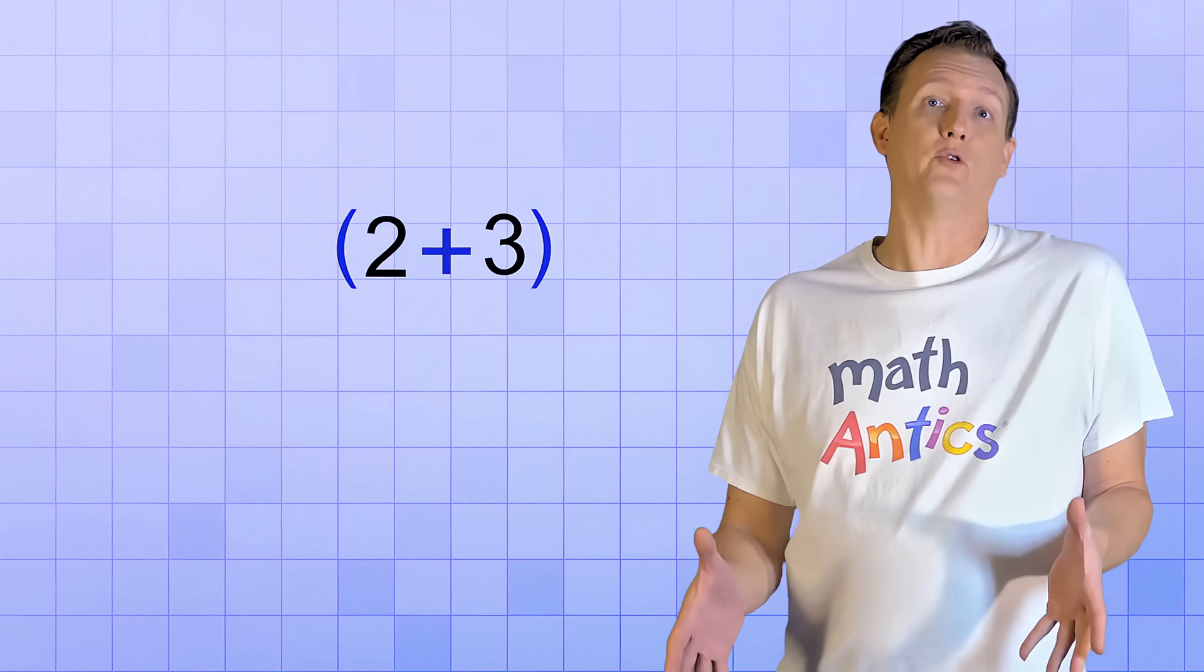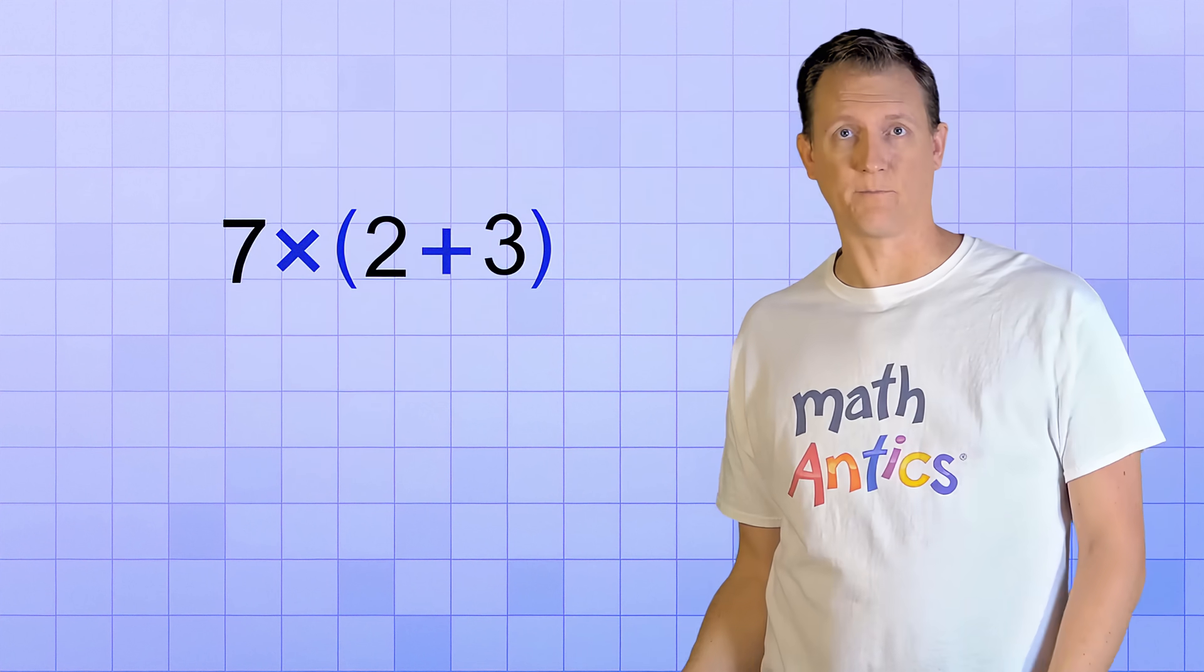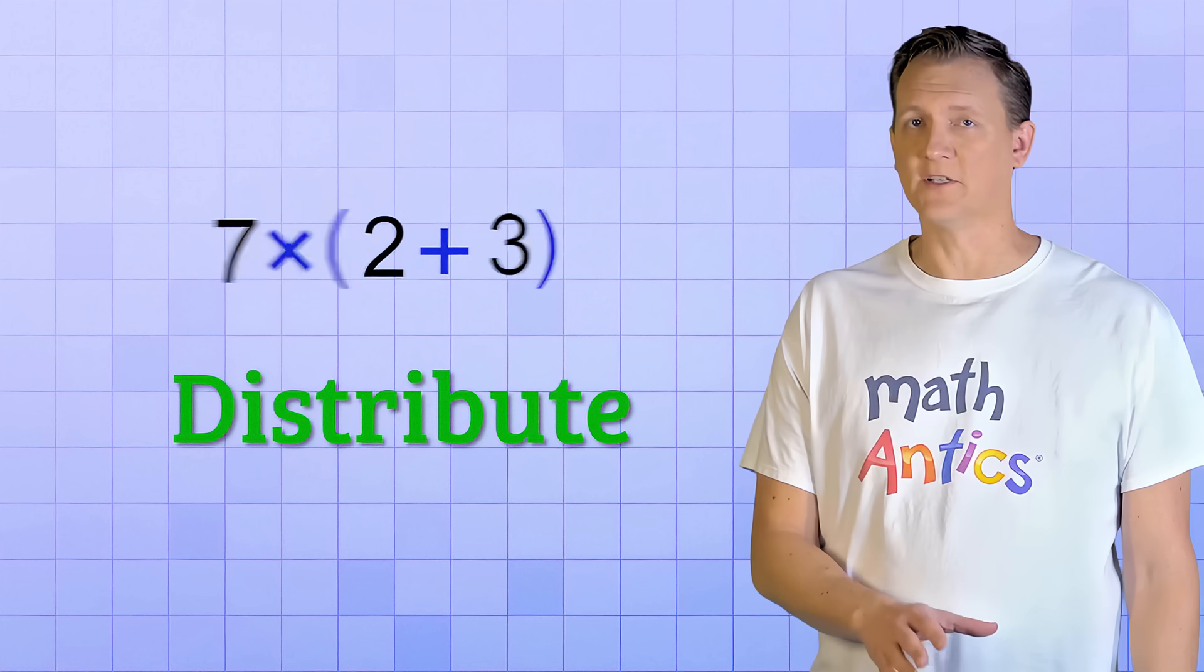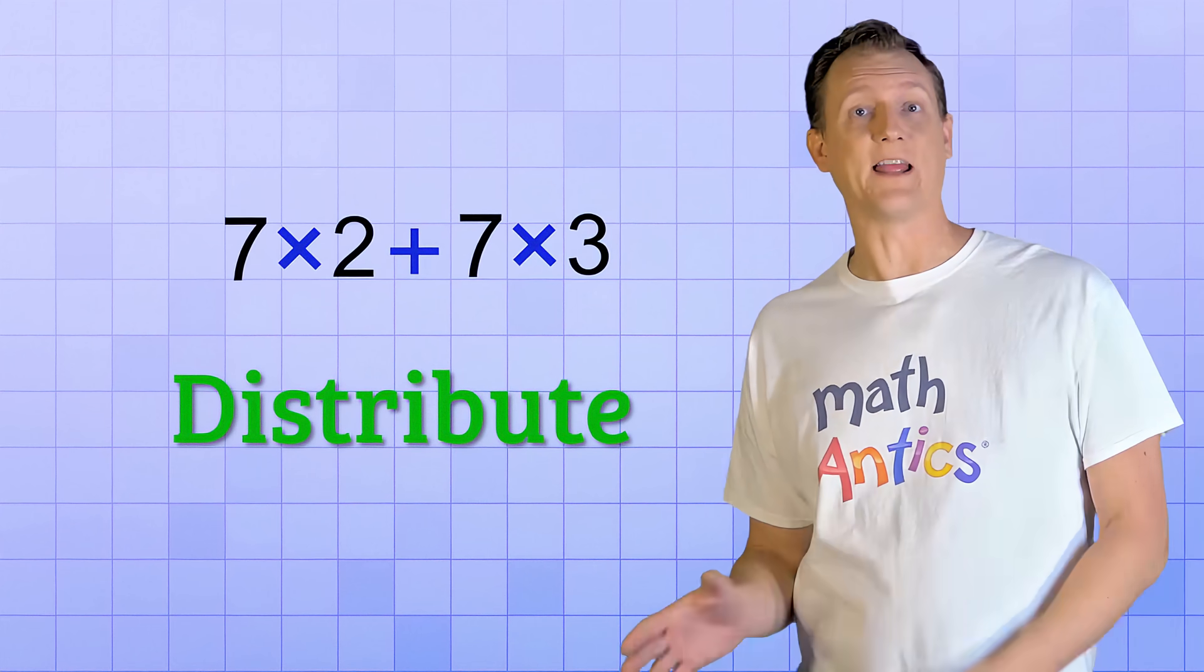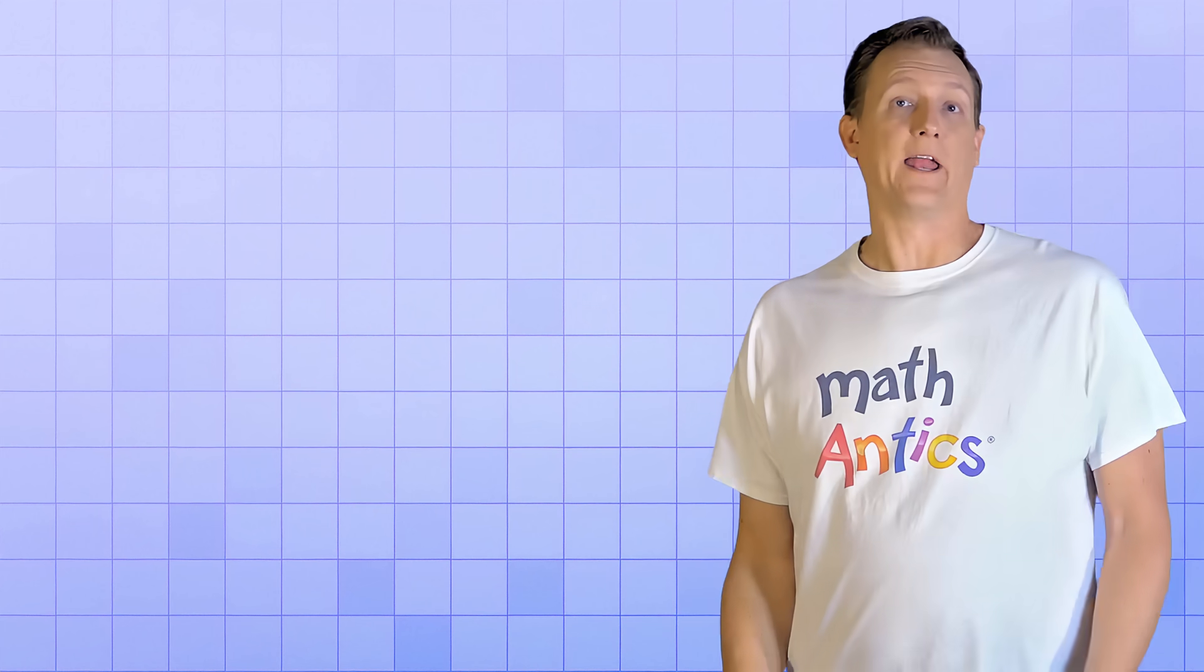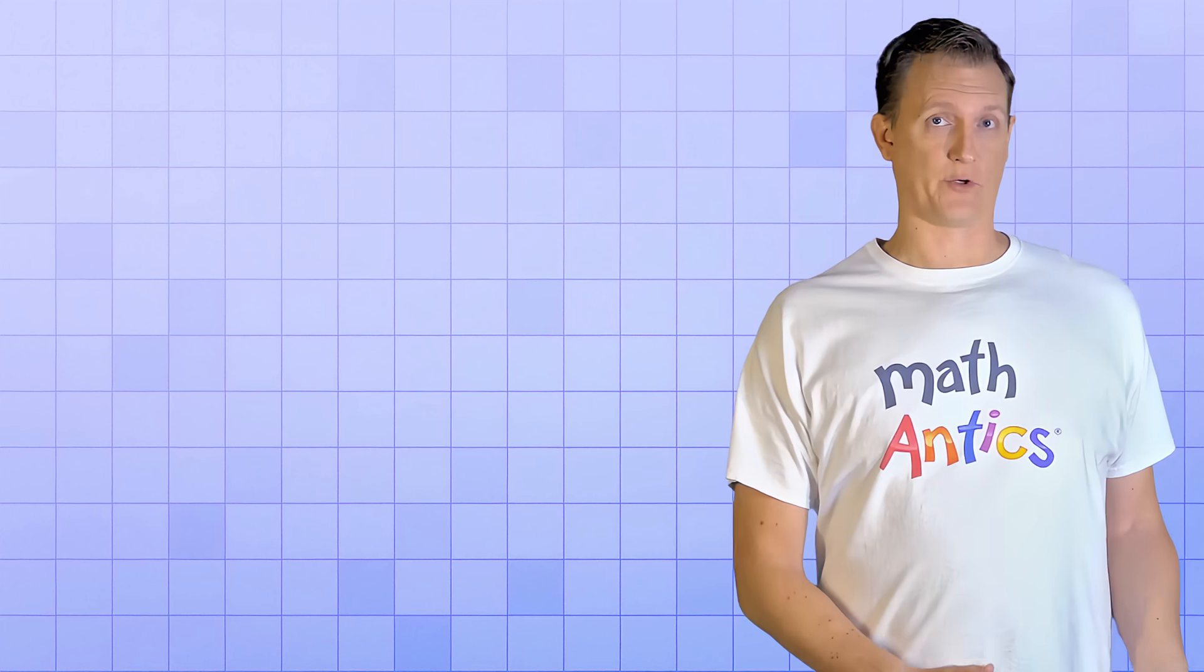So the Distributive Property is basically a way of getting rid of a group that is being multiplied by a factor. If you distribute the factor to each member of the group, you'll get the same answer you would if you calculate what's in the group first and then multiply. And it works no matter how many members are in the group.